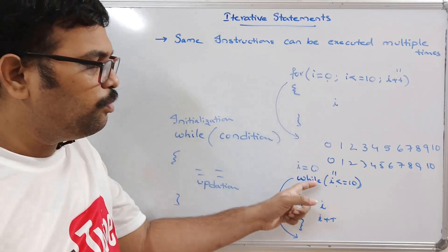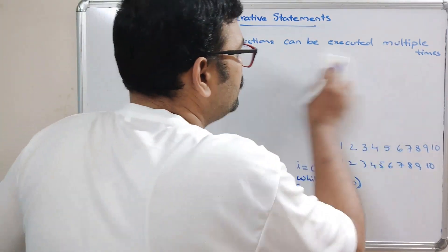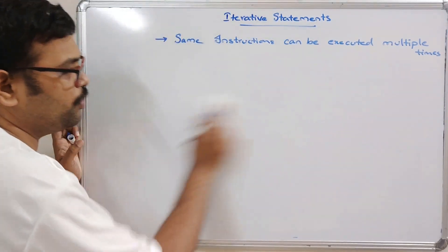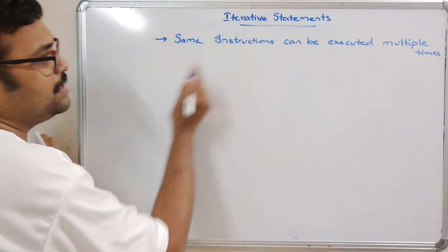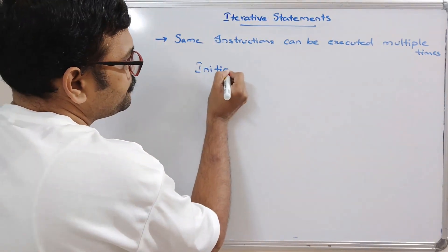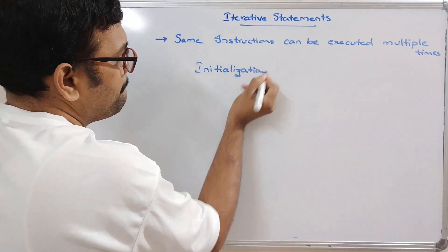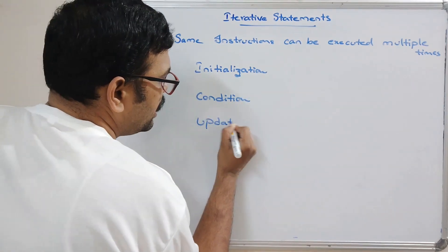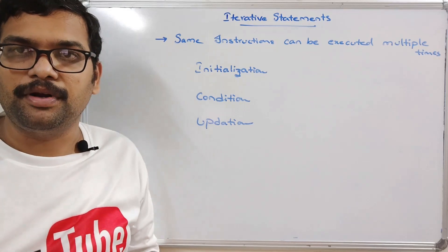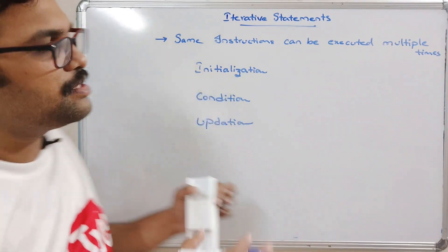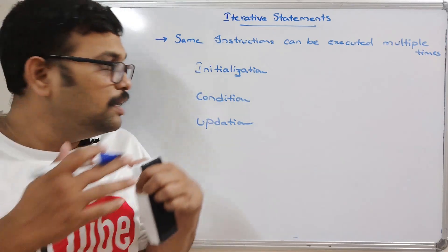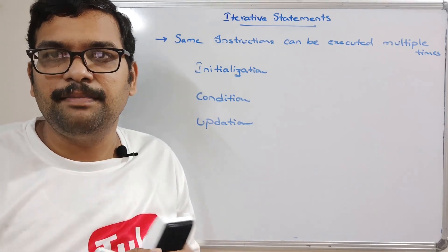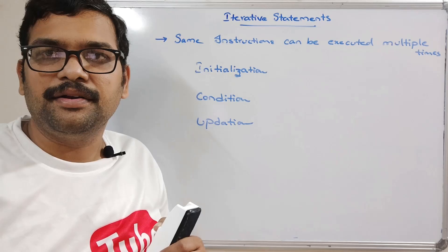Recalling the concept: whatever iterative statements you are using — either for loop or while — you need to follow the three things: initialization, condition, and updation. These three are very important. We've discussed for loop and while loop, and now I will demonstrate these two iterative statements by executing a small HTML code.